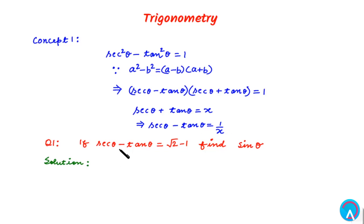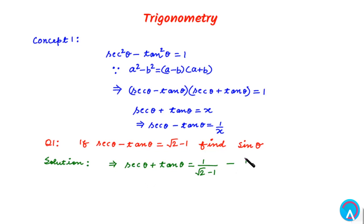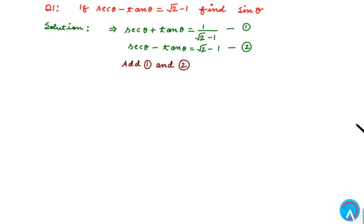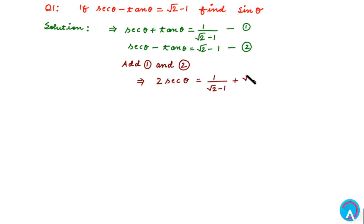Here we are given that secθ - tanθ = √2 - 1, so this implies secθ + tanθ = 1/(√2 - 1). Let's call secθ + tanθ = 1/(√2 - 1) as statement 1, and secθ - tanθ = √2 - 1 as statement 2. Now if we add statements 1 and 2, then +tanθ and -tanθ get cancelled, giving us 2·secθ = 1/(√2 - 1) + (√2 - 1).